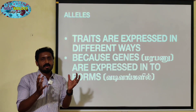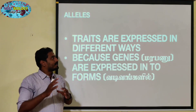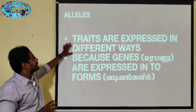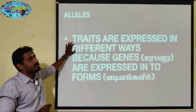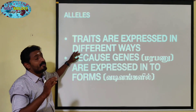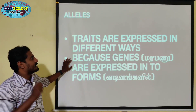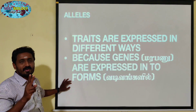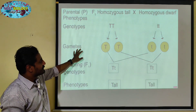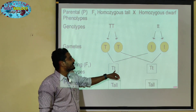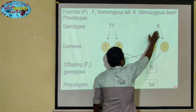Genes can be expressed in two different ways. Capital T capital T is the genotype that gives a tall plant. Small t small t is the genotype that gives a dwarf plant. So genes express characters in two forms.